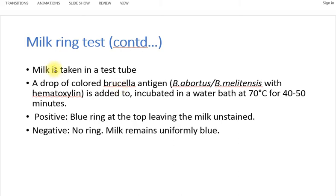For the milk ring test procedure, a test tube is taken with the pooled milk sample. A coloured antigen — Brucella antigen from Brucella abortus or Brucella melitensis stained with hematoxylin dye — is added. The mixture is incubated in a water bath at 70°C for 40 to 50 minutes. After incubation, a blue ring at the top with unstained milk is a positive reaction; if there is no ring and the milk remains uniformly blue, this is a negative reaction.